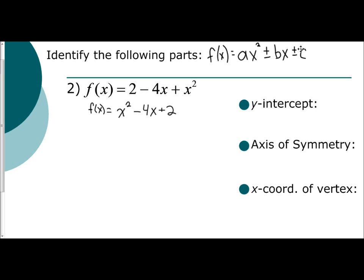The first thing is to find our y-intercept. Remember, the y-intercept occurs when x is equal to 0. If you plug in 0 to x², it cancels; plug in 0 to -4x, it cancels. So you're left with positive 2. The y-intercept is the coordinate (0, 2). The shortcut is to just identify your c-value — your constant — and your x-value will always be 0.